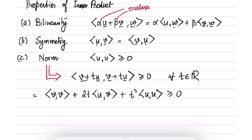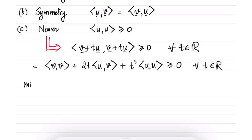This is a quadratic expression in t, and we are saying it must be greater than or equal to zero for all real t. We can choose the t that minimizes the left-hand side — since the inequality holds for all t, it also holds for the minimizing t. Because the expression is quadratic, we can easily find that the minimizing t is given by: t equals negative of the inner product of u with v, divided by the inner product of u with u.